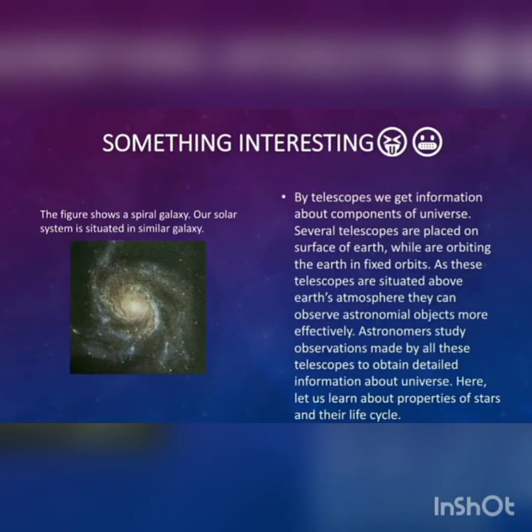By telescope we have obtained information about the components of the universe. Several telescopes are placed on the surface of the earth, while others are orbiting the earth in fixed orbits. Since these telescopes are situated above Earth's atmosphere, they can observe astronomical objects more effectively.